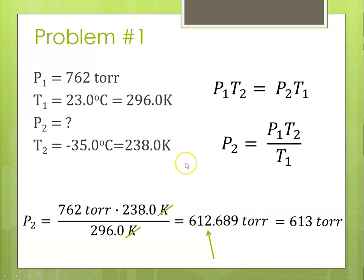It's also good to look at what was going on here. Our temperature decreased, and in Gay-Lussac's law, there's a direct relationship between pressure and temperature. If the temperature went down, the pressure should have gone down. It went from 762 to 613. It did go down, so we solved it correctly. And that's a way you can check yourself.